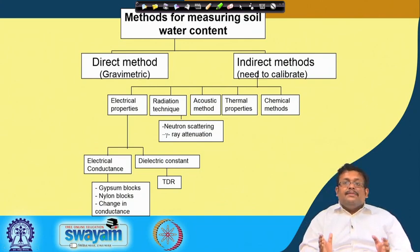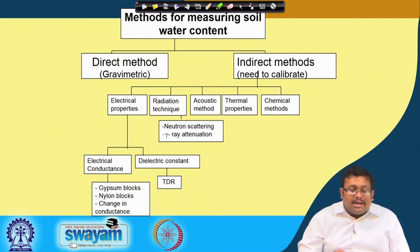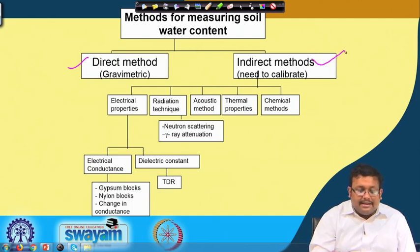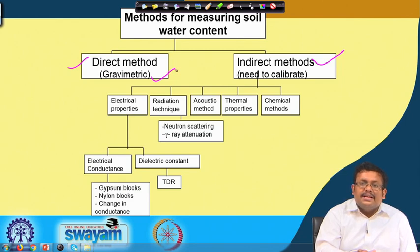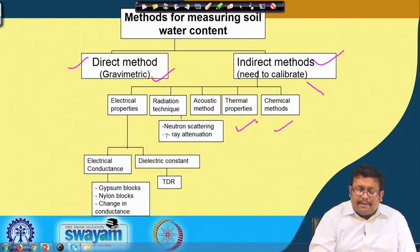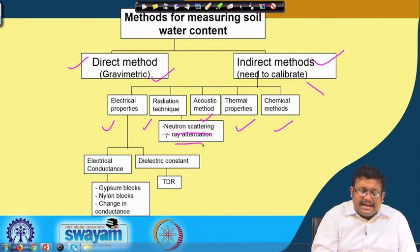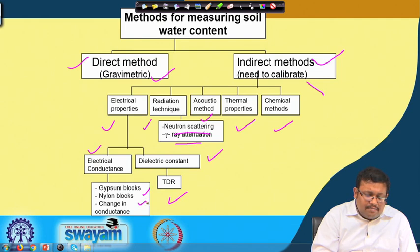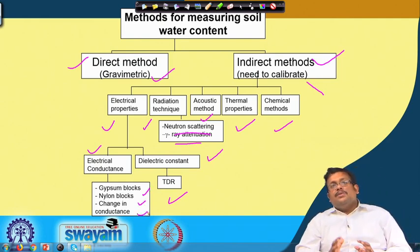We have discussed the energy concepts of soil. Now let us discuss different methods for measuring soil water content. These can be broadly differentiated into direct methods and indirect methods. Direct methods include the gravimetric method and the volumetric method. Indirect methods need to be calibrated for specific soil conditions and can be divided into chemical methods, thermal property methods, acoustic methods, radiation techniques, and electrical property-based methods. Radiation techniques are of two types: neutron scattering and gamma ray attenuation. Electrical property-based methods are divided into electrical conductance and dielectric constant. Based on dielectric constant we use TDR (Time Domain Reflectometry), and based on electrical conductance there are gypsum blocks, nylon blocks, and changing conductance.